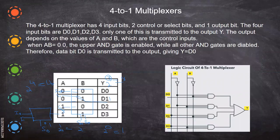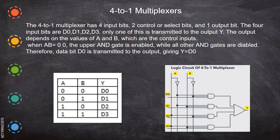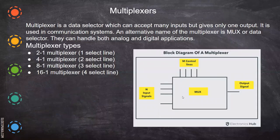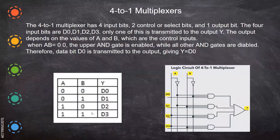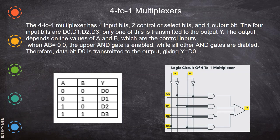A 4-to-1 multiplexer has four input bits, two control or select bits, and one output bit. In a multiplexer there will always be only one output — many inputs and one output. The four input bits are labeled D0 and so on as seen previously. Now we are going to see the 4-to-1 MUX exclusively. These are all the four inputs and this is the output. A and B are the select lines. Since we need to select 00, 01, 10, 11, we have given their complements as well.